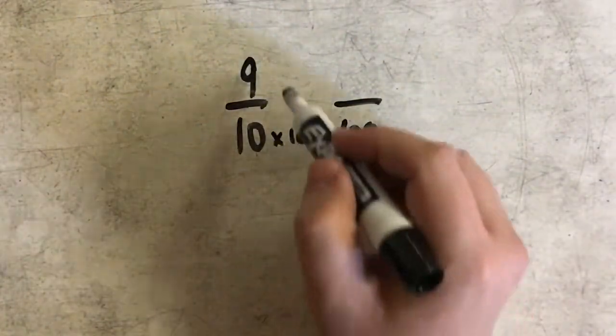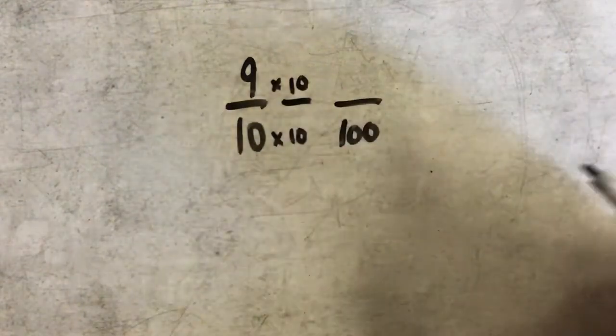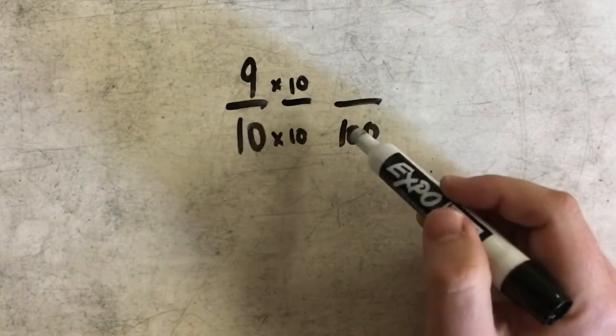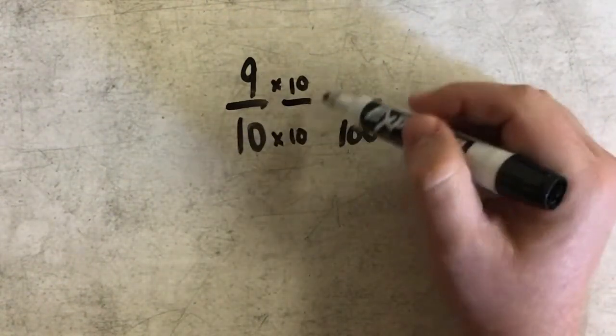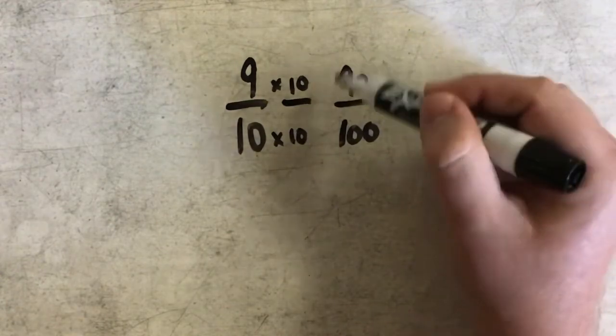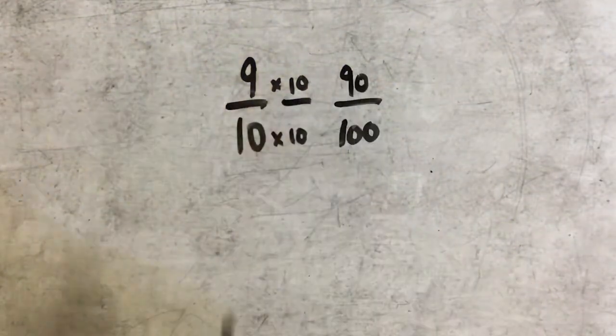If I multiply the denominator by ten, I would also want to multiply the numerator by ten in order to get an equivalent fraction. So therefore, nine-tenths would really be equivalent to ninety hundredths, since I multiply nine by ten and get ninety.